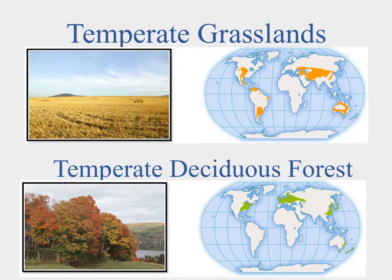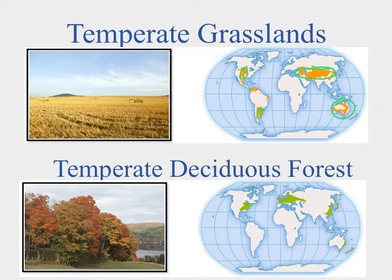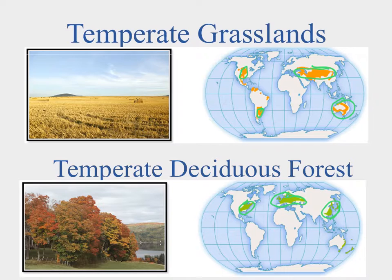Temperate grasslands are found in the American Midwest, Argentina, Australia, and Asia. Grasslands have very fertile soil because grass grows, dies, breaks down, and returns nutrients to the soil — these regions could produce enough food to feed the entire world. Temperate deciduous forests are found on the eastern US, Europe, and the east coast of Asia, where deciduous trees are green in summer, drop their leaves in cold winters, and animals hibernate.